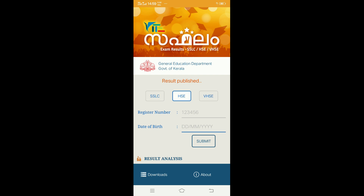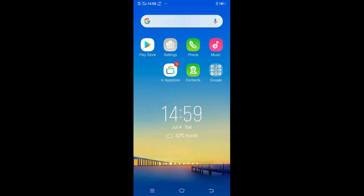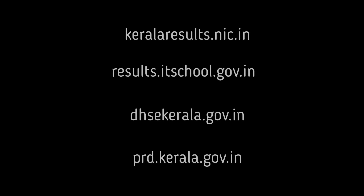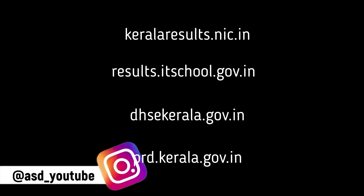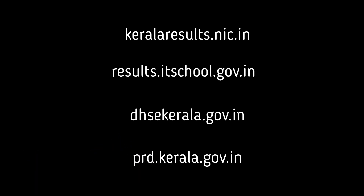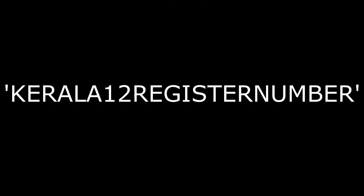We will see the results. If you want to get the results, you can also visit keralaresults.nic.in, itschool.gov, dhsekerala.gov.in, or prd.kerala.gov.in. You can also get results via SMS — send 'Kerala 12' followed by your register number, for example 56263, to receive your results.